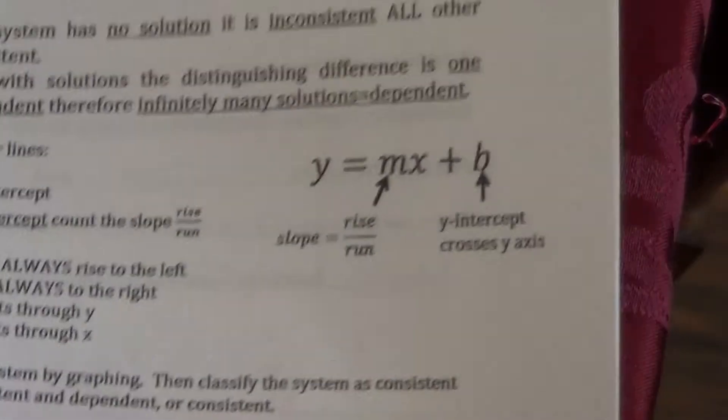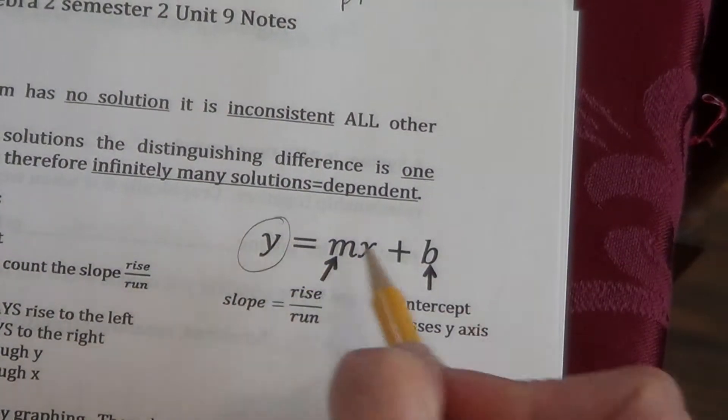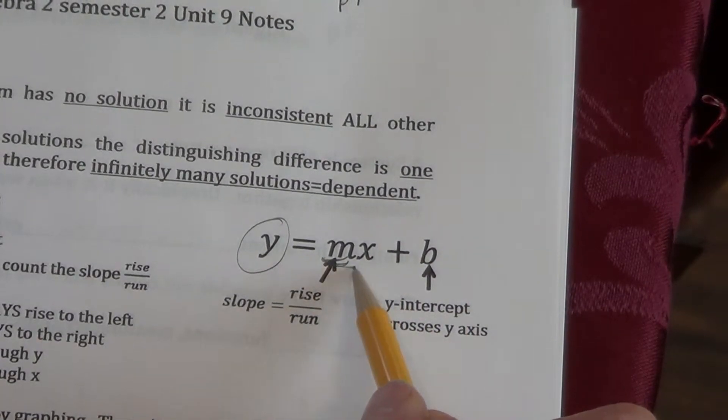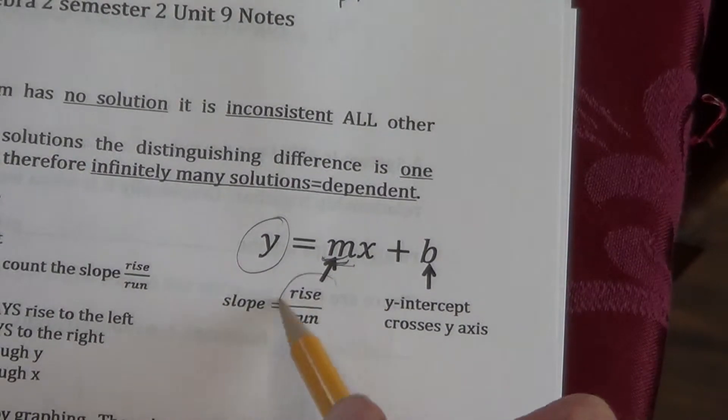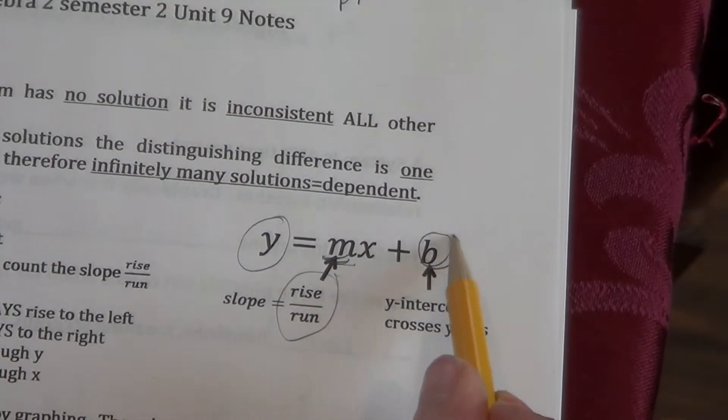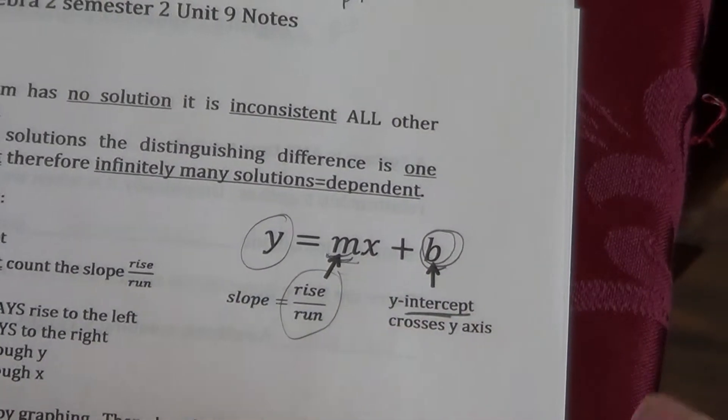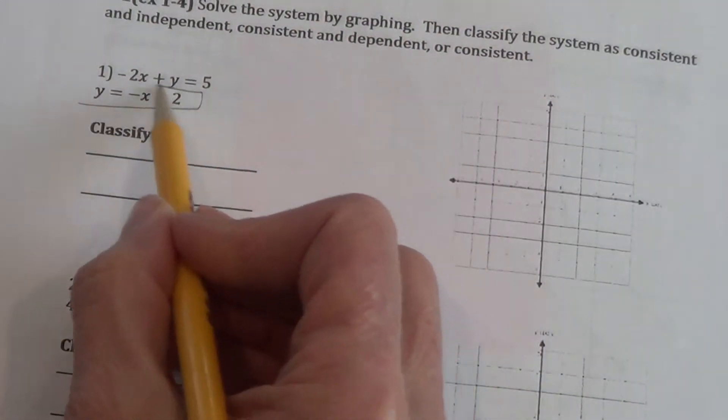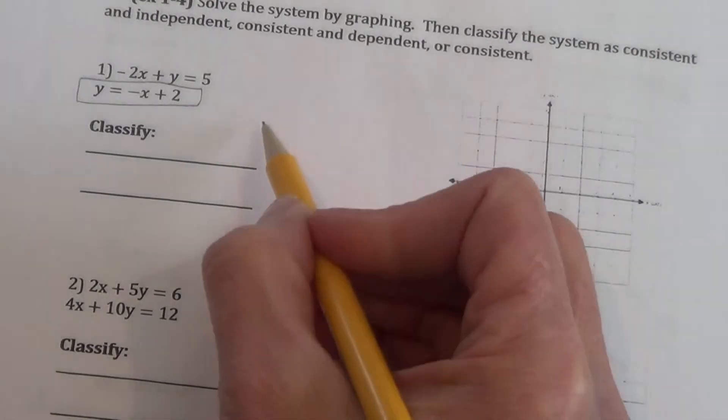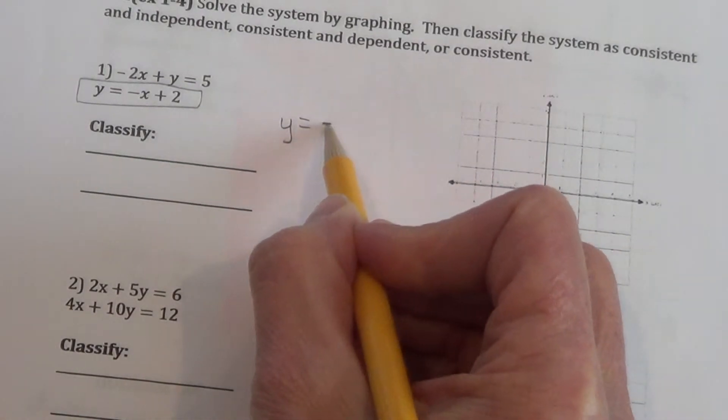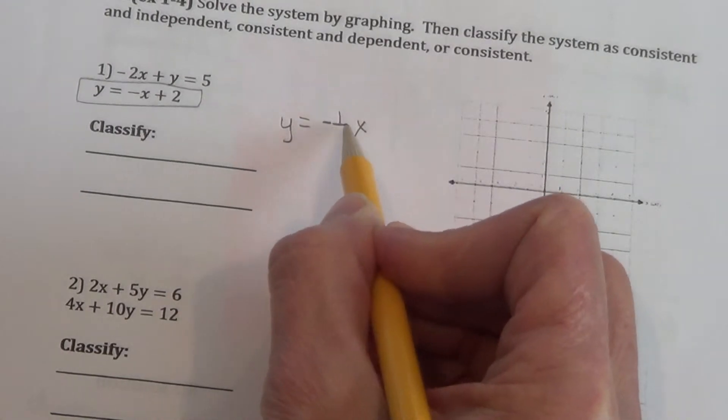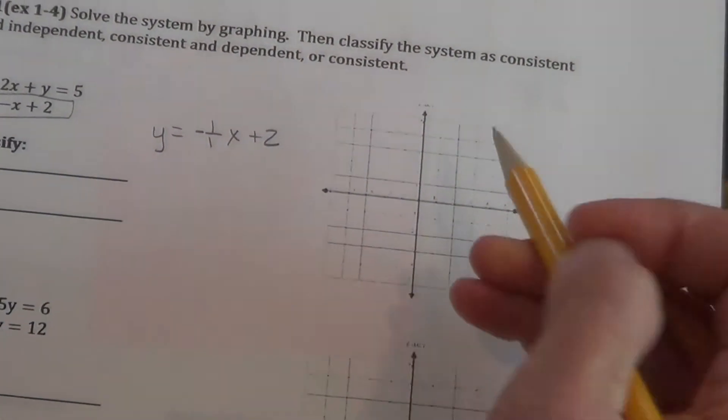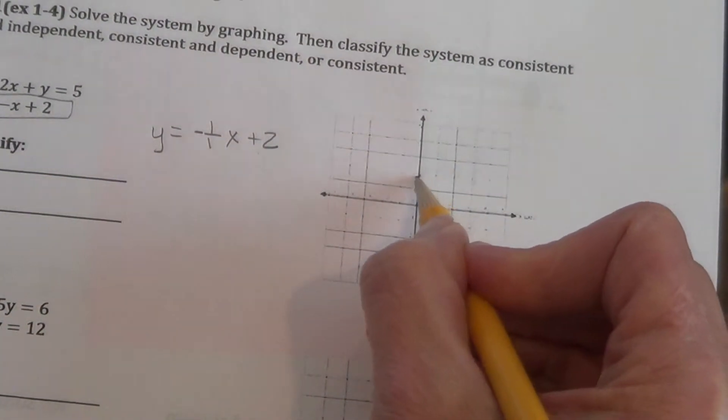We're going to review graphing a little bit. You always want to get y by itself in a linear function. And then, from that, the number attached to the x is your slope, which is rise over run. And the value that's not attached to the x is your y-intercept. So, let's practice this just a bit. This one looks all ready to graph. It's got the y by itself. So, we write it with the slope very obvious. Instead of just a negative x, we'll put a negative 1 over 1x plus 2. So, the first thing we do is we find the y-intercept. It's plus 2. So, we go to the y-axis, go up to plus 2, and put a dot.